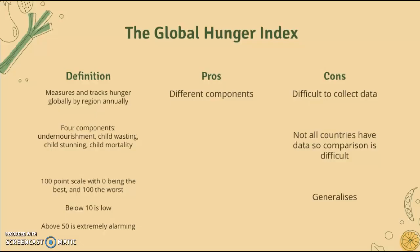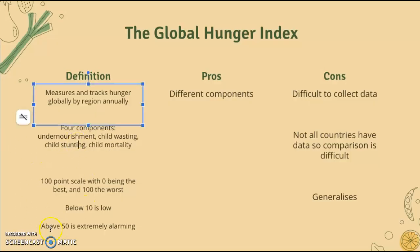The Global Hunger Index measures and tracks hunger globally by region annually. It takes into account four components: undernourishment (not getting enough nutrition), child wasting (when a child's weight is too low for their height), child stunting (when the child's height is too low for their weight), and finally child mortality — the number of deaths per 1,000 children under the age of five per year.